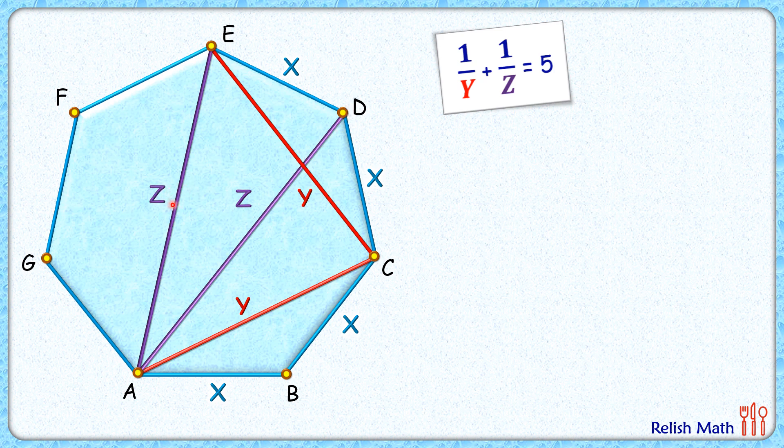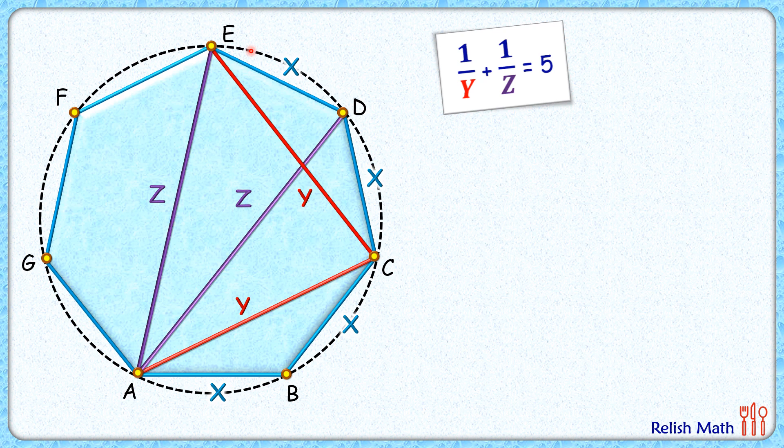Now the interesting part: it's a regular polygon, and regular polygons can be fully enclosed in a circle. All regular polygons are circumscribed polygons. Now it has turned from a polygon to a circle question. If you look carefully, ACDE is a cyclic quadrilateral.